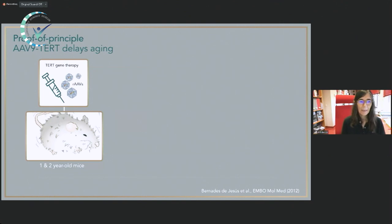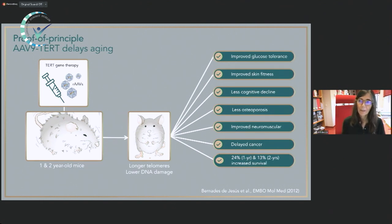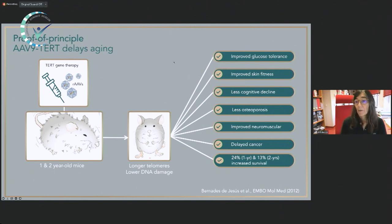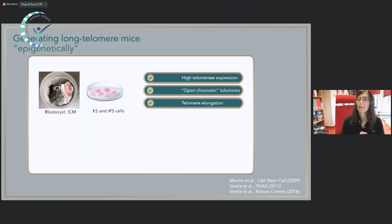We did a first experiment in which we gave a single intravenous injection of these vectors with telomerase to either middle-aged or old mice. These mice retained longer telomeres and less DNA damage at telomeres. We could delay not one but many different diseases of aging, supporting that a single molecular cause of aging can impact many different diseases. We were very worried about cancer, but cancer was actually delayed. Mice receiving telomerase showed fewer tumors at a given age. There were no deleterious effects — the one-year-old group lived about 24% longer, and the two-year-old group lived 13% longer.